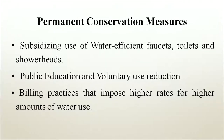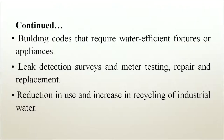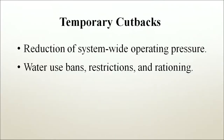Temporary cutbacks or permanent operating adjustments can help conserve water. Permanent conservation methods include subsidizing use of water-efficient faucets, toilets and showerheads; public education and voluntary use reduction; building practices that impose higher rates for higher water use; building codes requiring water-efficient fixtures; leak detection surveys, meter testing, repair and replacement; and reduction in use and increase in recycling of industrial water. Temporary cutbacks include reduction of system-wide operating pressure, water use bans, restrictions and rationing.